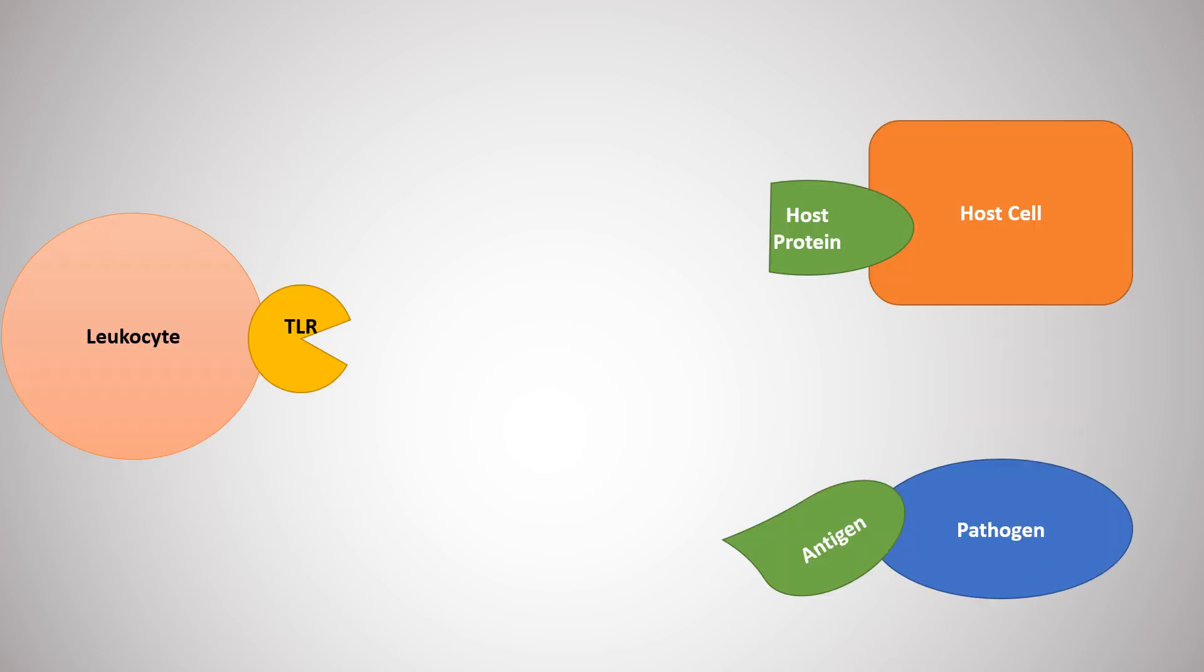Pathogens will sometimes be able to bypass the protective outer layer and enter the body. This will elicit an immune response from white blood cells in the body, also known as leukocytes. Leukocytes are coated with special receptor proteins called toll-like receptors, or TLRs.